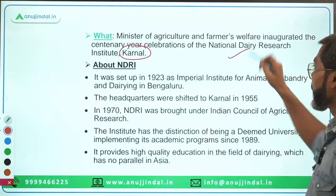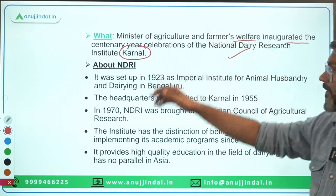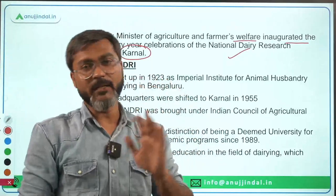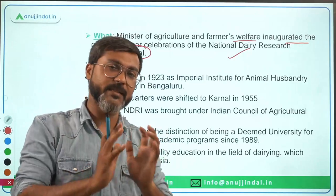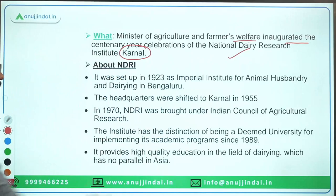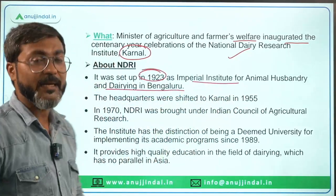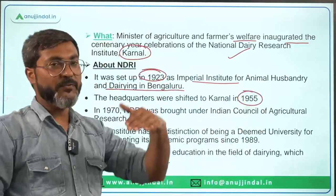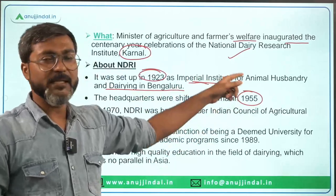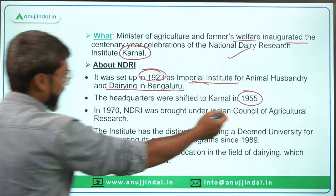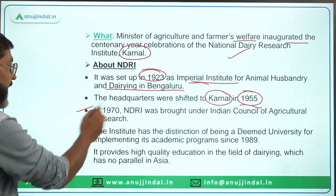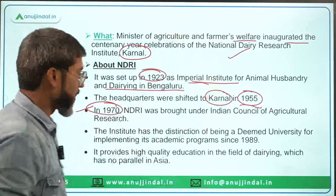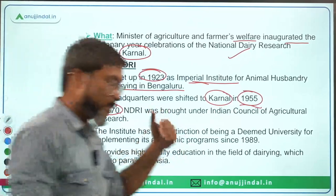The Ministry of Agriculture and Farmers Welfare inaugurated the centenary year celebration of the National Dairy Research Institute located in Karnal. NDRI was established in the year 1923 as the Imperial Institute for Animal Husbandry and Dairying, in Bangalore. In 1955, the headquarters were transferred to Karnal. It was initially named Imperial Institute for Animal Husbandry and Dairying, and in 1970 it was brought under the control of ICAR and renamed as NDRI.